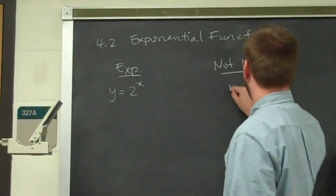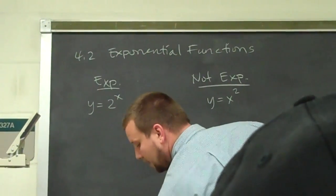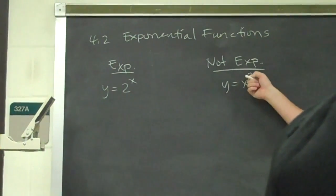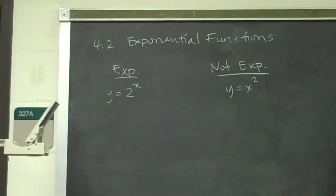On the other hand, if I do y equals x squared, it's a function, it has exponents, but the exponent is just a constant 2. My variable shows up as the base and not as the exponent.